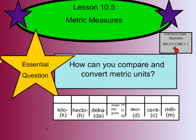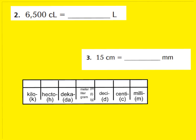Please turn in your GoMath book to Lesson 10.5. I'm going to take a moment, boys and girls, and introduce you to this table right here. This chart is going to help you understand that with the metric system, it's all based on the powers of 10. This right here is our basic unit — meters, liters, and grams. Meters measures length, liters measures capacity, and grams measures weight.